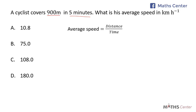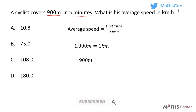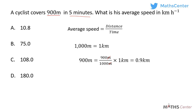To get the average speed in kilometers per hour, we convert 900 meters to kilometers and 5 minutes to hours. We know 1000 meters equals 1 kilometer. Since 900 meters is less than 1000 meters, we divide: 900 divided by 1000 times 1 kilometer equals 0.9 kilometers.